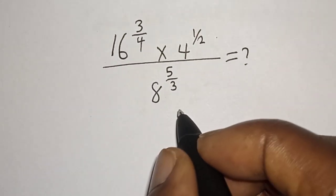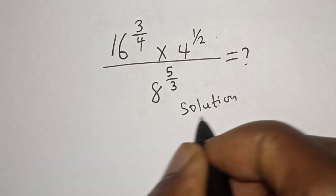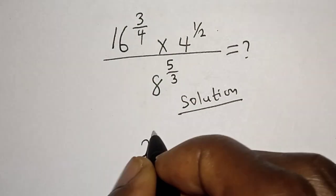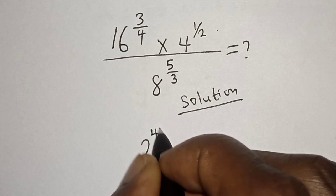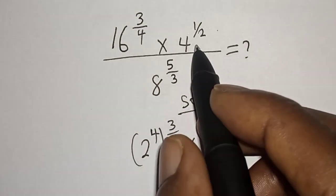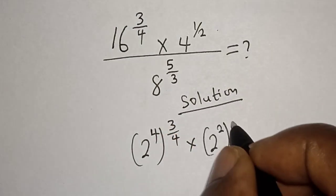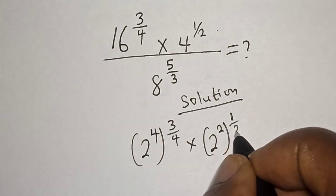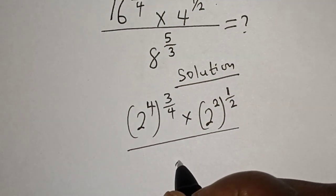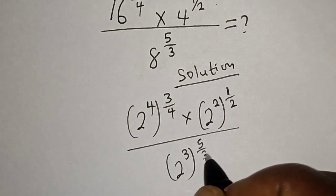Solution: 16 raised to power 3 over 4 can be written as 2 raised to power 4, all raised to power 3 over 4. Multiplied by 4 raised to power 1 over 2, which can also be written as 2 raised to power 2, multiplied by raised to power 1 over 2. Divided by 8 raised to power 5 over 3, which can be written as 2 raised to power 3, raised to power 5 over 3.